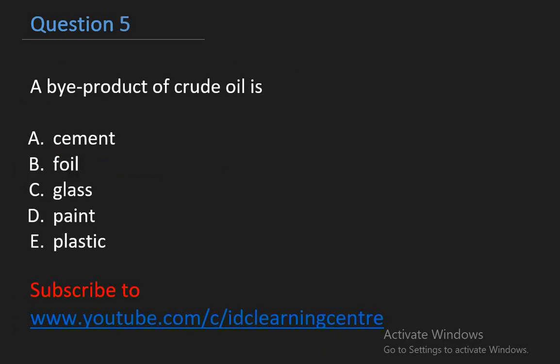And the last question is question five. This question says a byproduct of crude oil is A. Cement B. Foil C. Glass D. Paint E. Plastic is the right answer. Most plastic in use today comes from hydrocarbons derived from crude oil, natural gas, and coal.